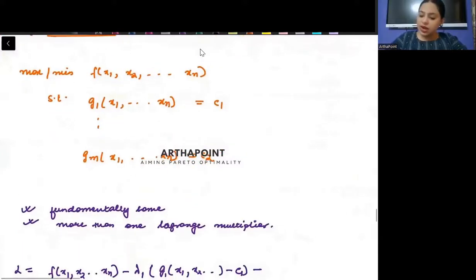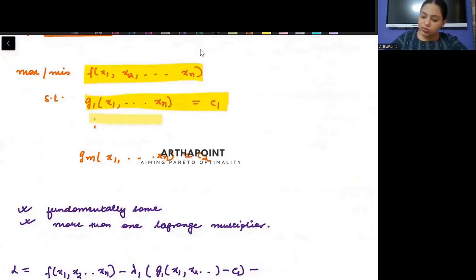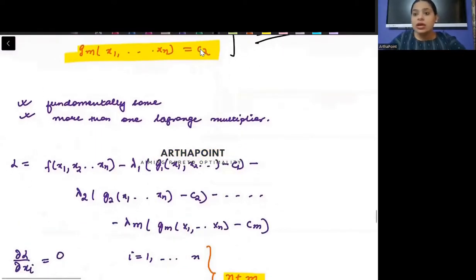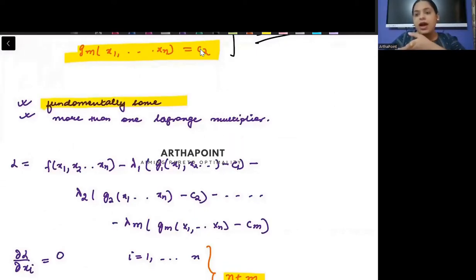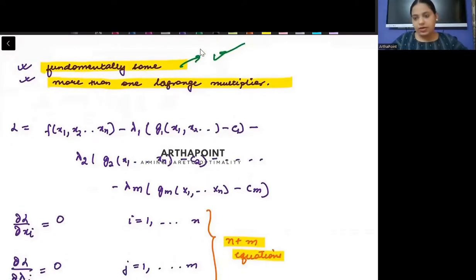The second generalization is where you have one objective function but multiple constraints — there are m constraints. Fundamentally this is the same, only now I will have m lambdas, one lambda for each constraint. So there will be m Lagrange multipliers.